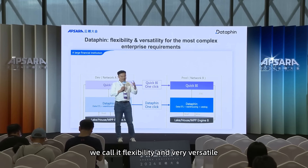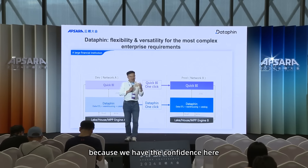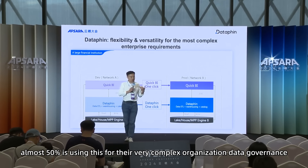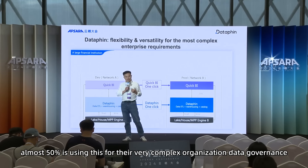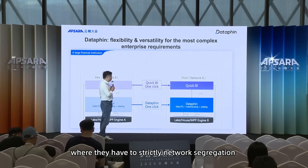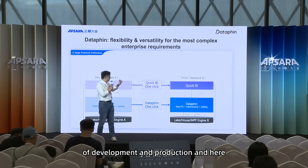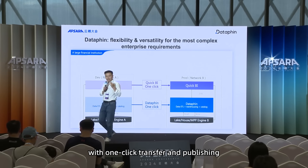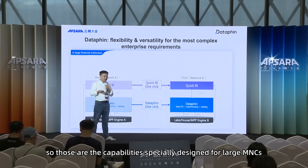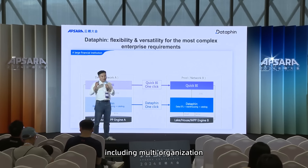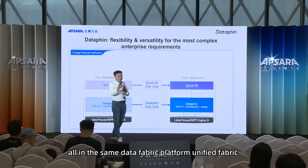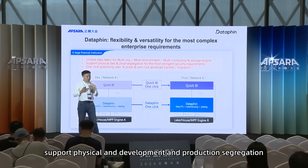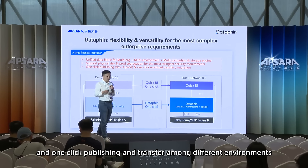We call it flexibility and versatility — built for the most complex enterprise requirements. For example, in the auto industry in China, almost 50% of companies are using this tool for their very complex organization data governance. For financial institutions with strict network segregation of development and production, we can do totally segregated dev and production environments with DataFin, with one-click transfer and publishing. Those capabilities include multi-organization, multi-data engine, and multi-environment support, all in the same DataFabric platform.